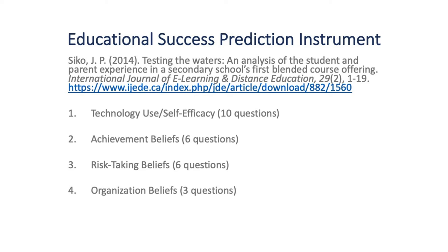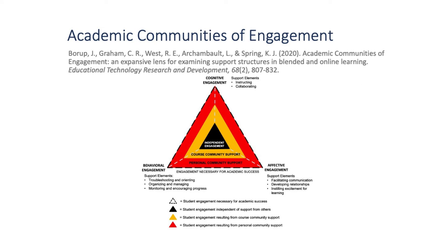Obviously, one of the limitations of this instrument is that it is simply a prediction instrument. The next step in this line of inquiry — one that has yet to be taken by any researchers — is to design an orientation course around the four elements that K-12 students need to have success in the online environment, and then to validate whether that orientation is able to remediate any of these four areas that a student may be predicted to have a weakness in. No discussion around the supports required by K-12 students to have success in the online environment would be complete without a quick mention of the Academic Communities of Engagement Framework. In order for K-12 students to have success, they need to have full engagement on the cognitive, affective, and behavioral planes.